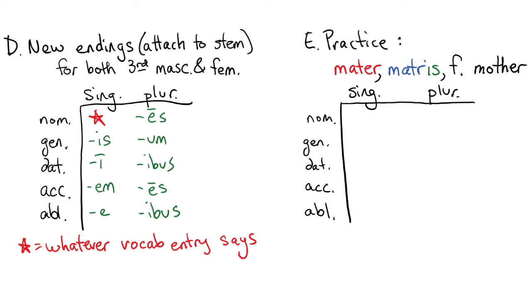The first thing we'll do is we'll carry mater straight out of the vocab entry to the nominative singular position, and then we'll carry matris out of the vocab entry to the genitive singular position. After that, our stem is M-A-T-R, which we got from dropping the I-S from the genitive singular, so we can write that out eight more times.